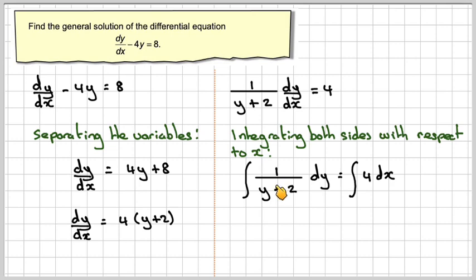So this is 1 over, so it becomes ln of y plus 2. We don't have to make any compensation here, and then if we integrate this 4, we're just going to get 4x. We've got a constant here.